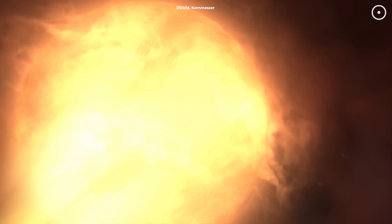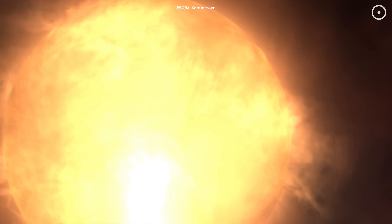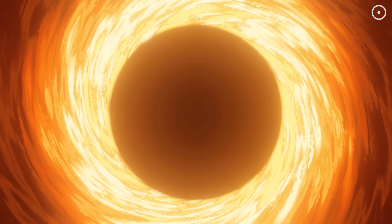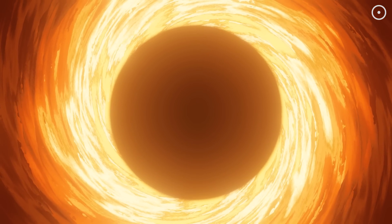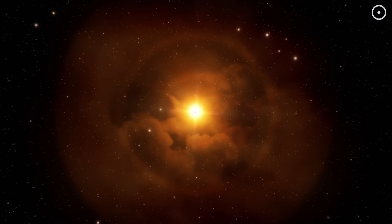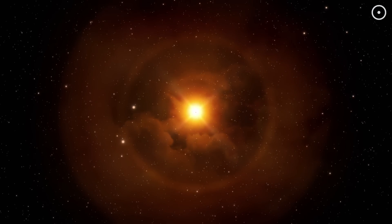A quasi-star consists of an outer shell of gas that is thousands of times the mass of our Sun. At the core, there's a black hole. As the black hole consumes the star's material, it releases energy, creating an incredibly bright and powerful object.